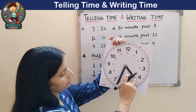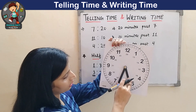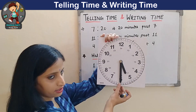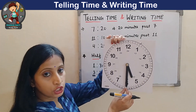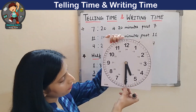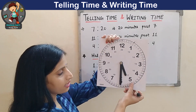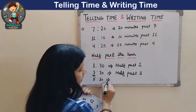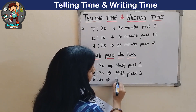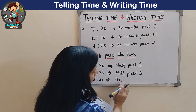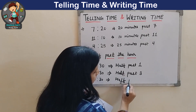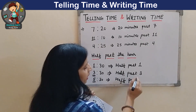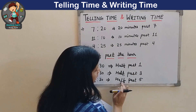Take one more example. The hour hand is between 5 and 6, and the minute hand is at 6. So the time is 5:30. Half an hour has passed, so we write: half past 5. I hope the concept of half past, minutes, and hours is now clear to you.